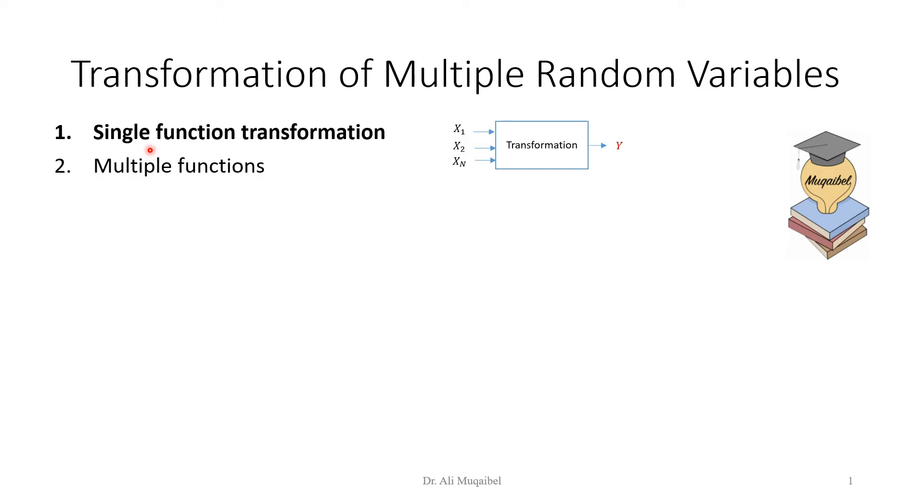So we have two scenarios. The first one is single function transformation, which means the output would be just one function, y. We can also think of multiple functions. We get y1 at the output, y2, y3, and what have you. So we can get here y1, y2, and so on. But we'll start with the single function transformation.